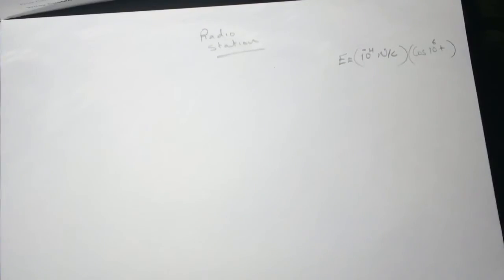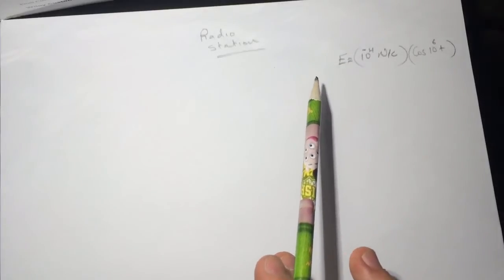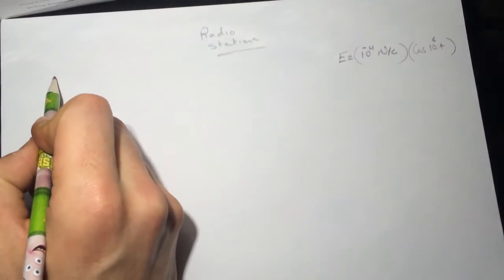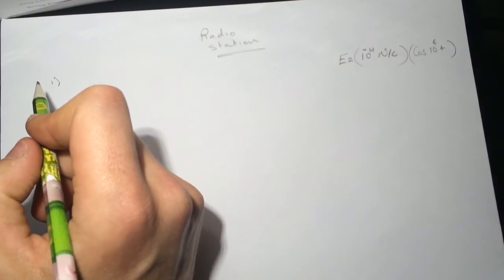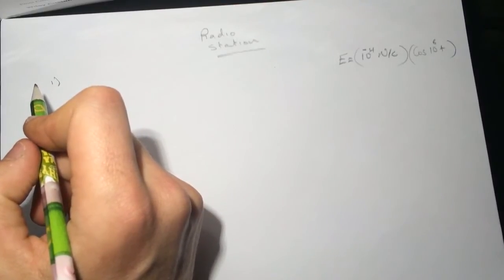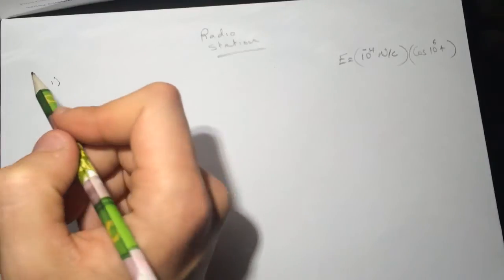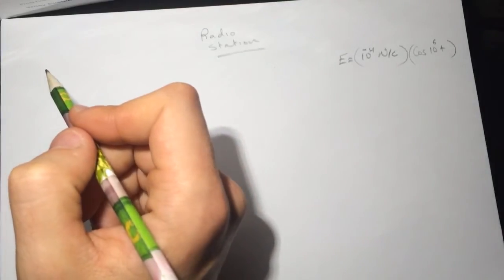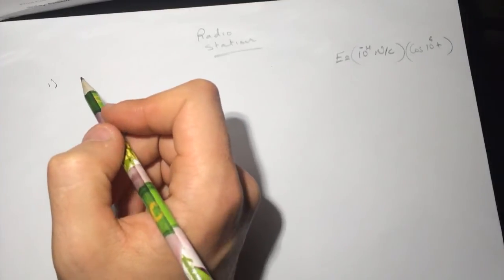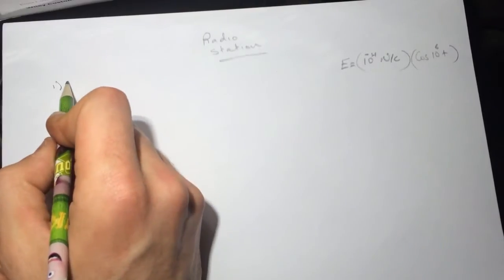Hi guys, this is the radio station smart physics problem. I'll read you the question fast. The electric field from the radio station some distance from the transmitter is given by this value here, which is in seconds. The first question is asking what is the peak voltage picked up on a 36-centimeter wire oriented parallel with the electric field direction. You can read the full question down in the description.